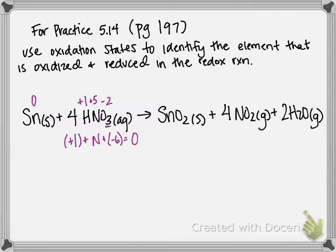So in HNO3: hydrogen is +1, nitrogen is +5, and oxygen is -2. Moving on to the next compound.